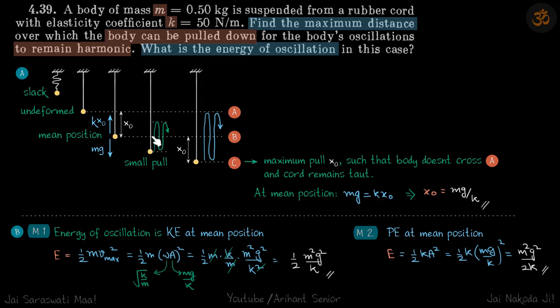Now the body is further pulled and released so about its mean position it will perform SHM. What is the maximum distance it can be pulled such that the motion remains harmonic? We have to see another position of the cord when it is undeformed. At mean position the string is extended and this is the undeformed position of the string.